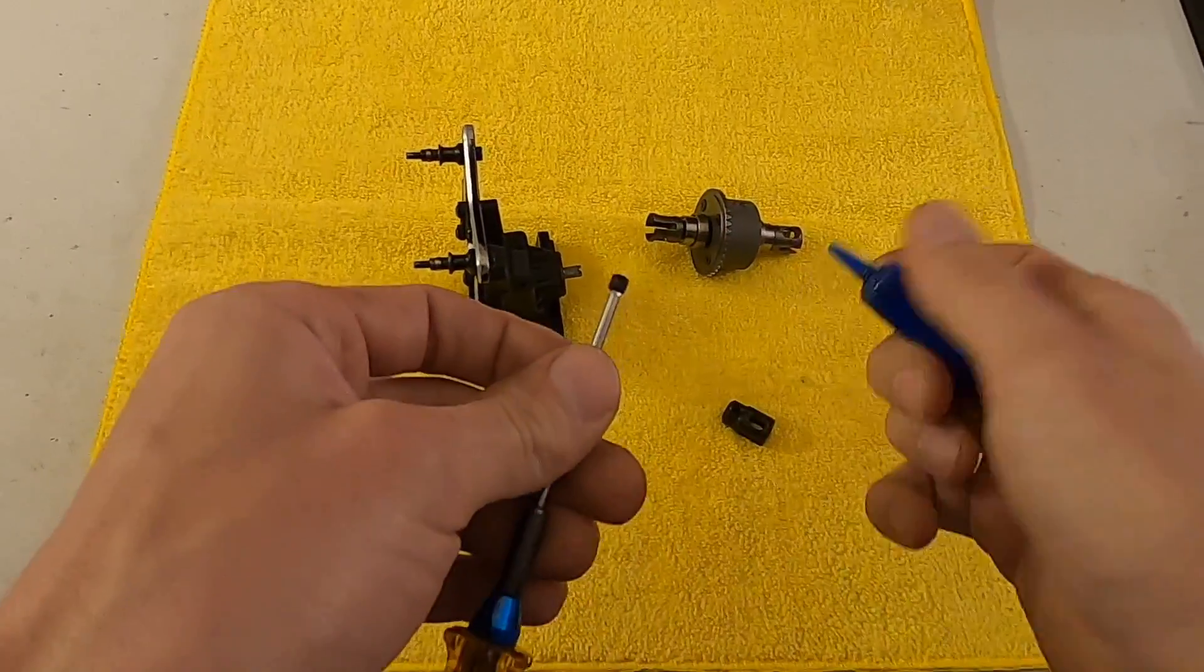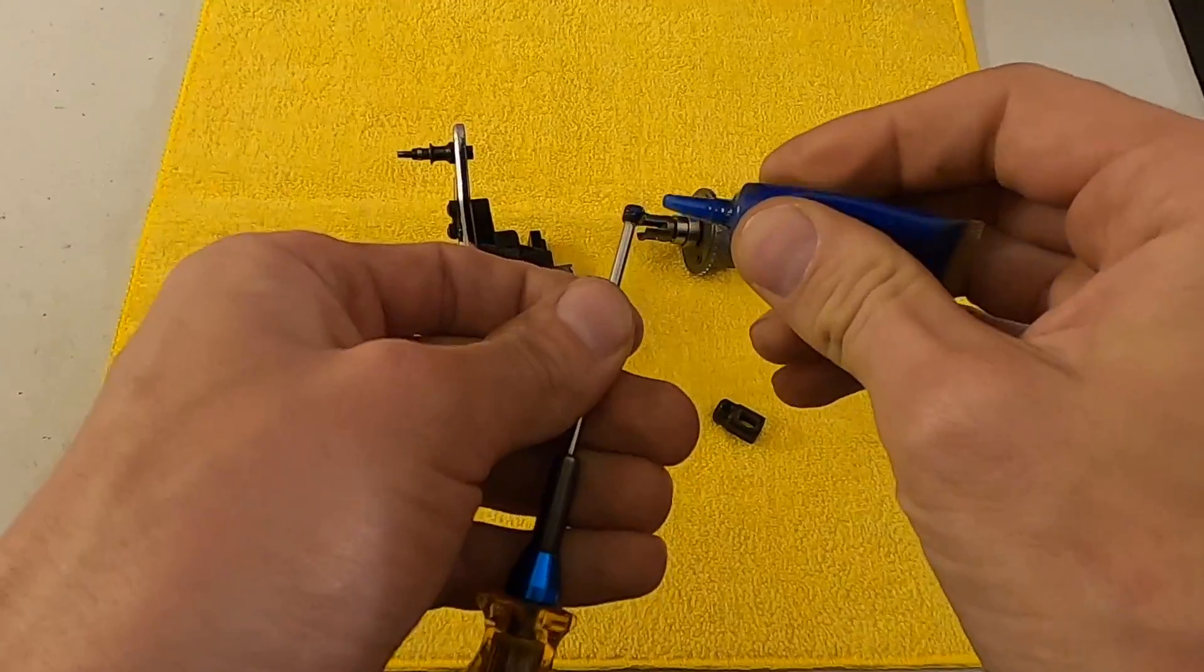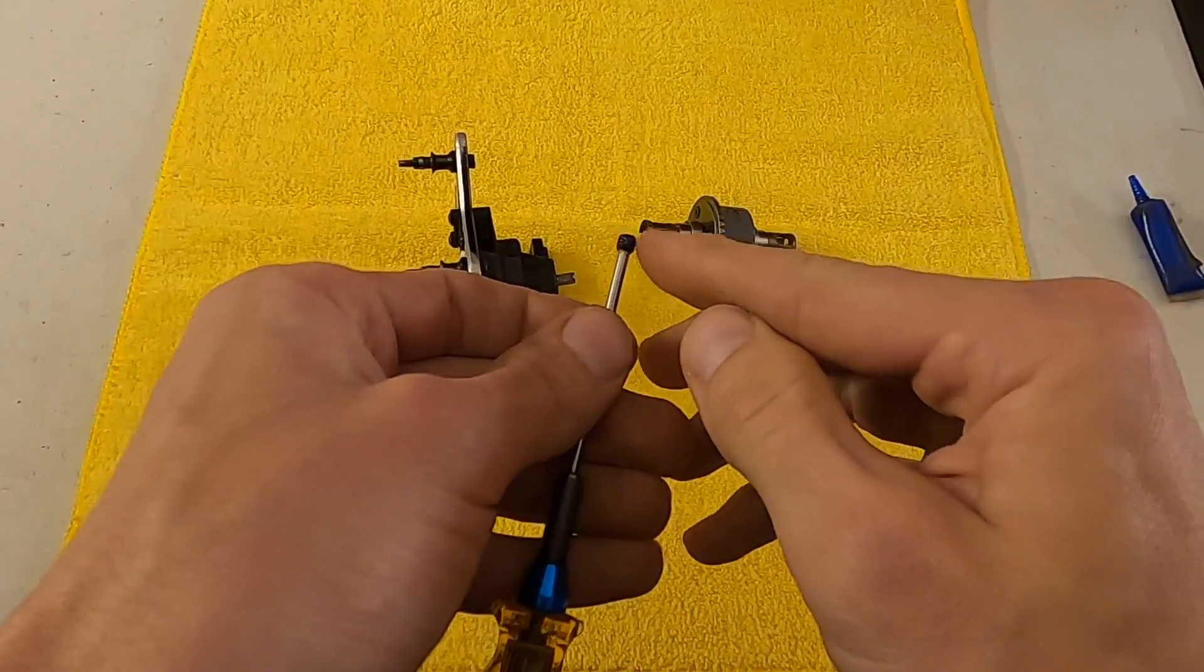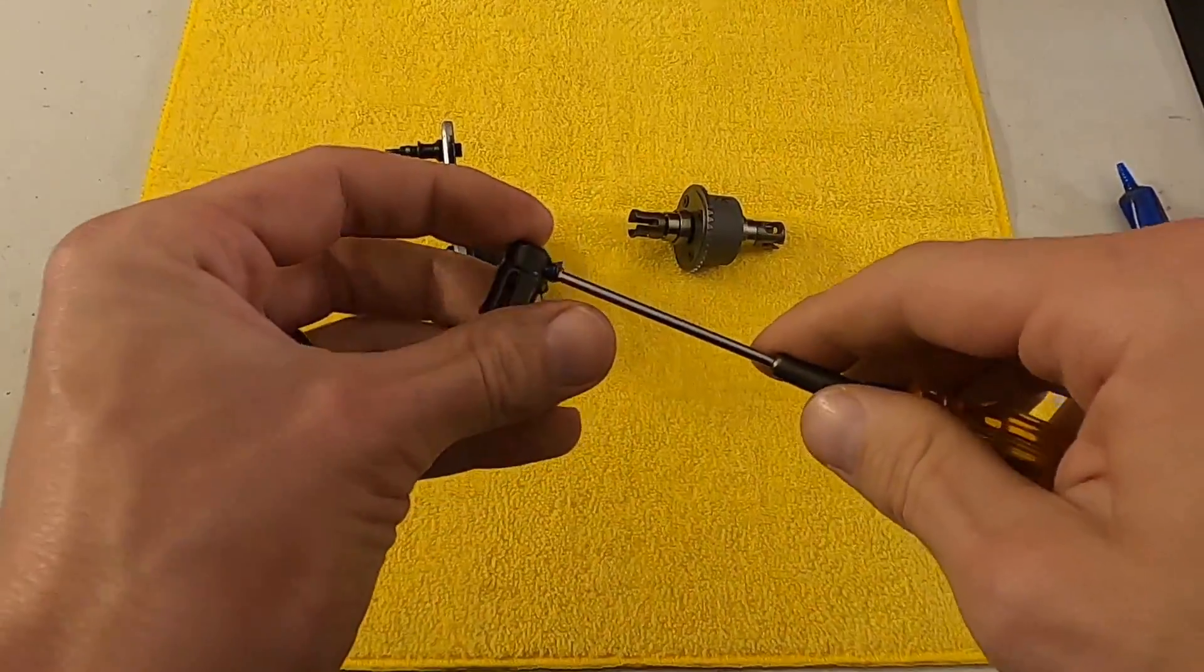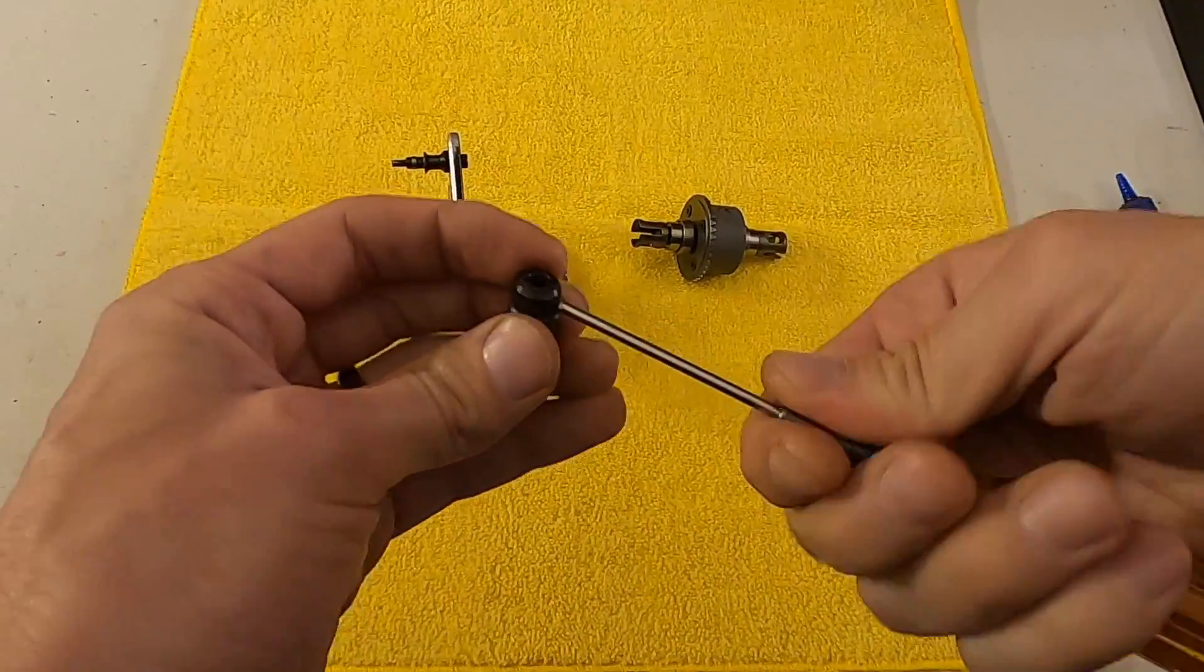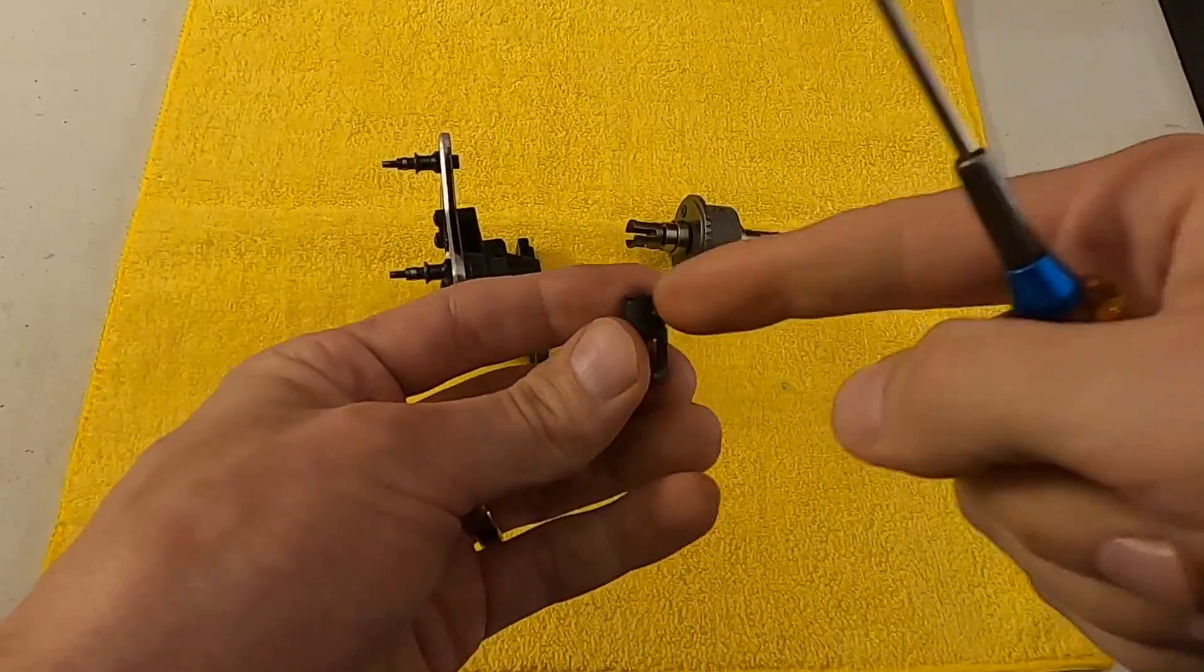Next, some good Loctite. You can use red here; I use a good blue. Seems to work well for me. Then I thread that in and go in and back out just to make sure all the threads are covered pretty well. You could also dab the Loctite into the threads directly.